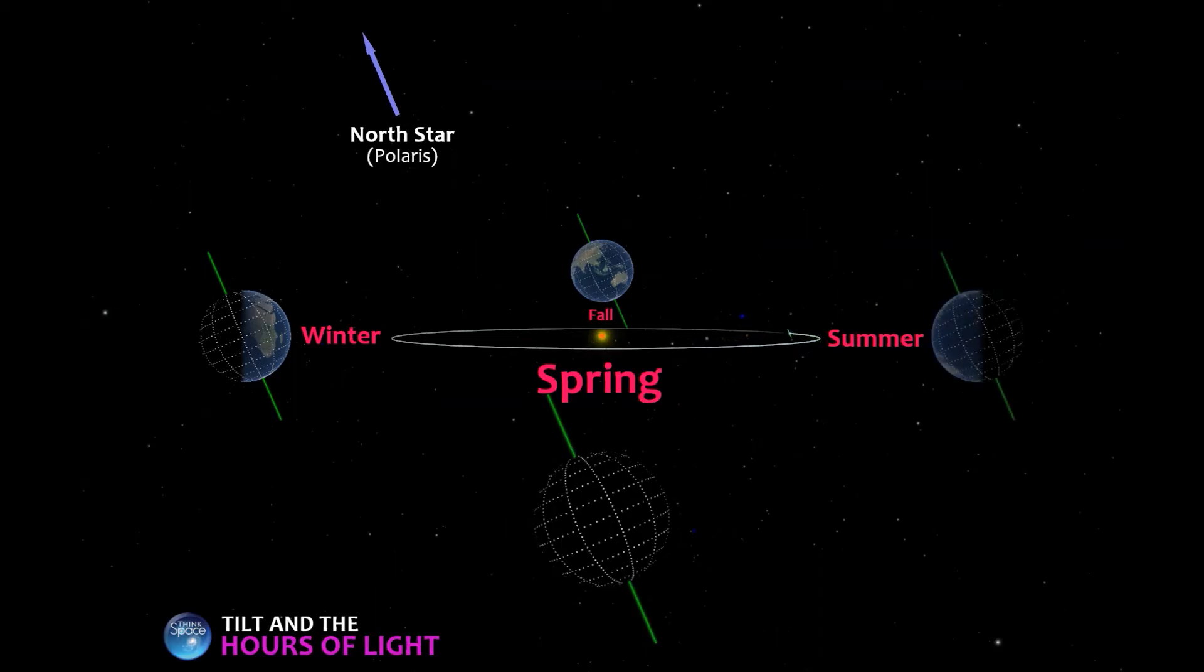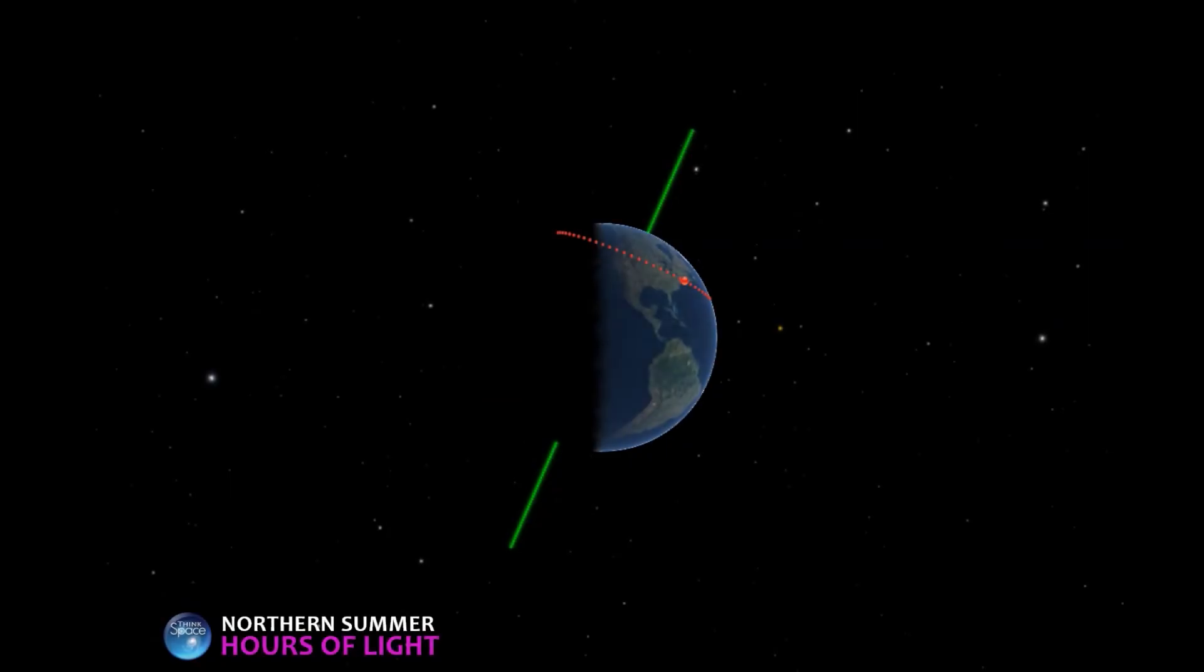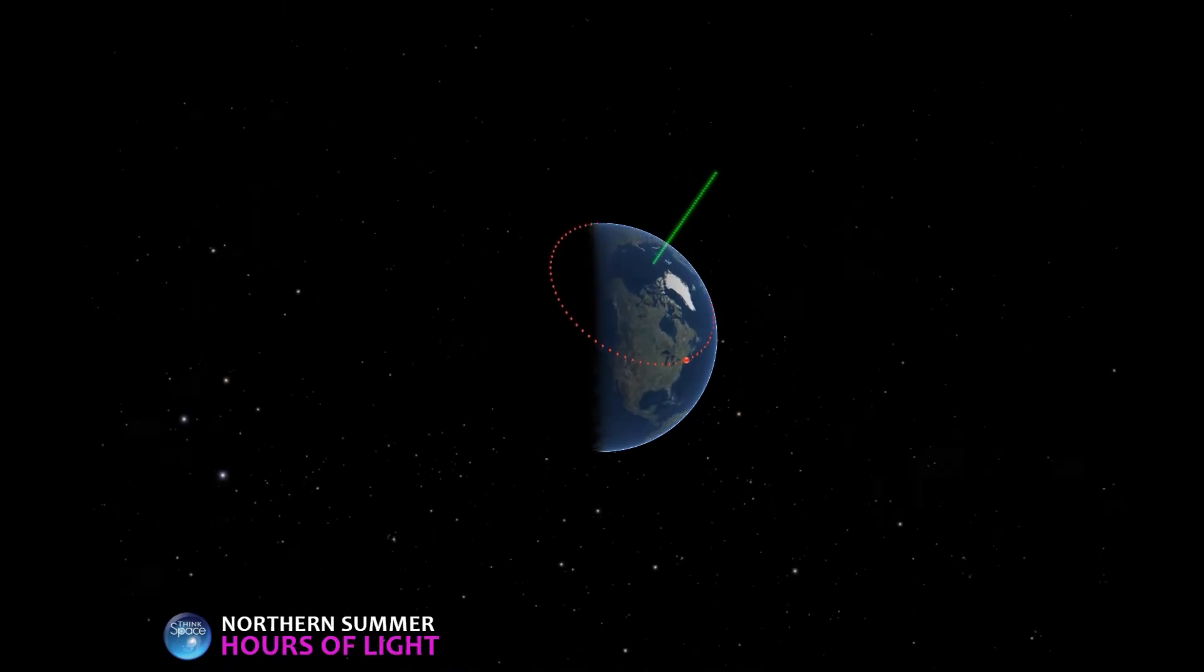Anyway, where were we? Oh, yeah. Let's take a peek at the planet from overhead, so you can see what it looks like as Boston rotates in and out of daylight.